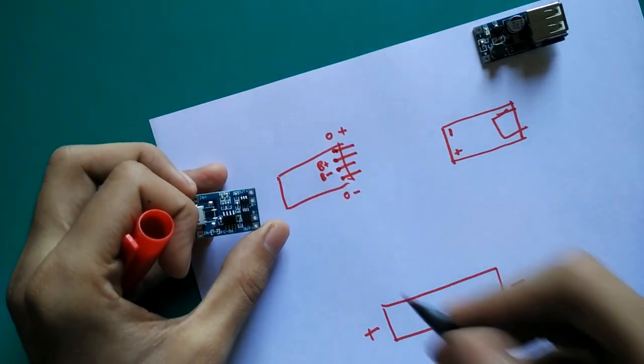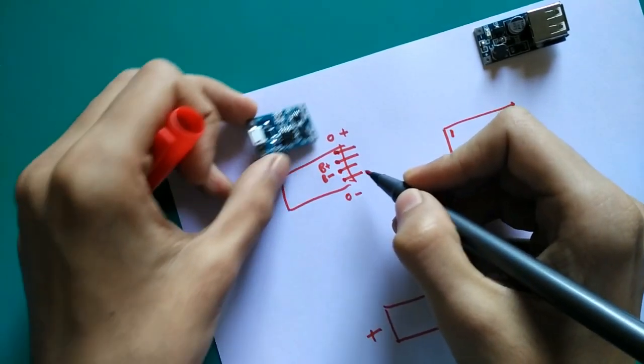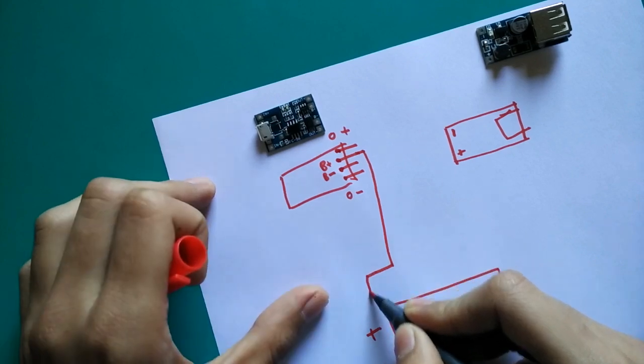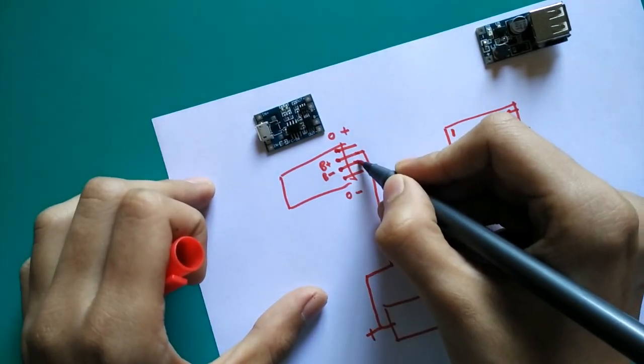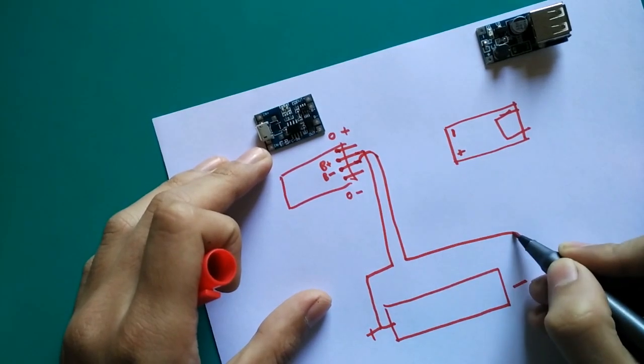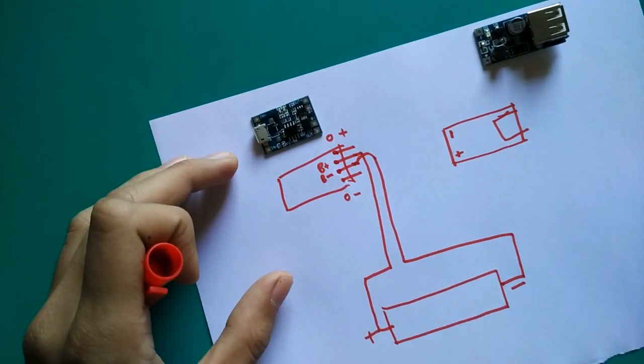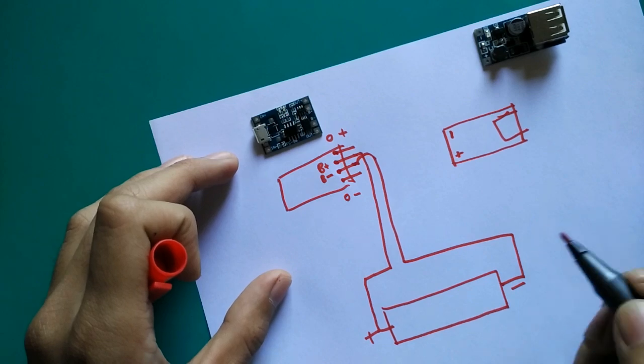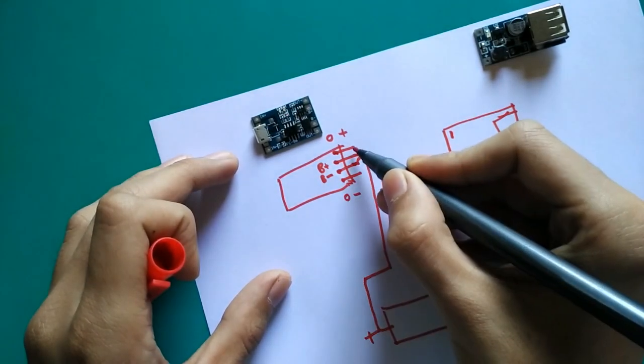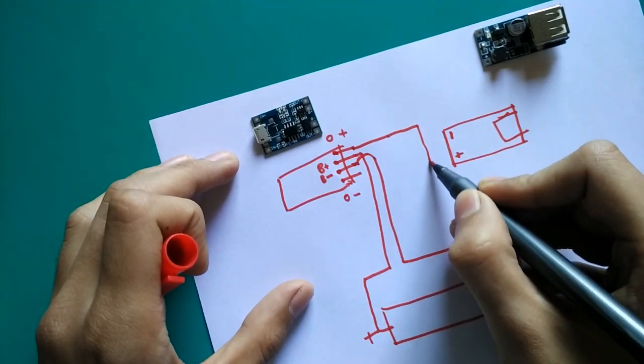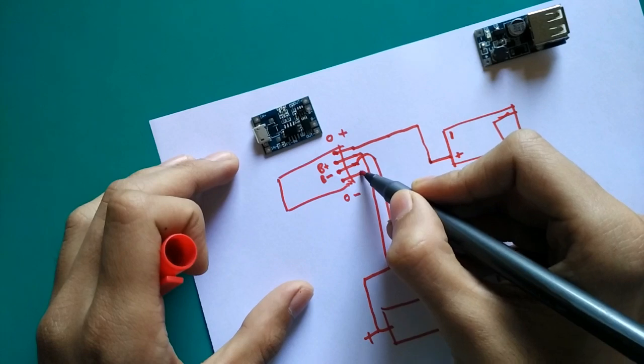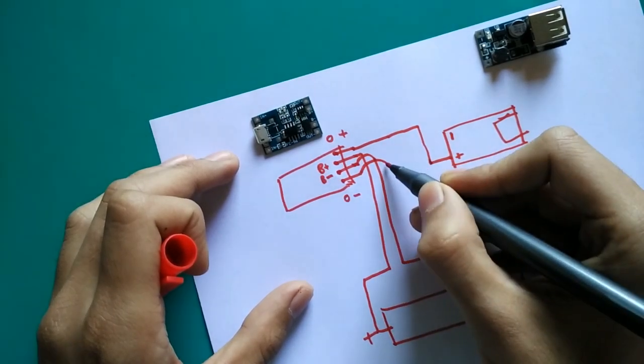The battery plus of the charging module will go to the positive terminal of the battery, and the B minus goes to the negative terminal of the battery. And the output plus of the boost module will go to the positive terminal of the USB port, and the negative terminal will go to the negative terminal of the boost module.